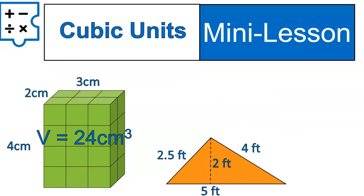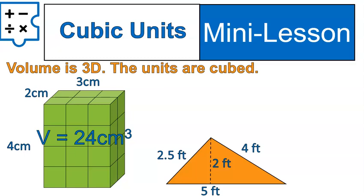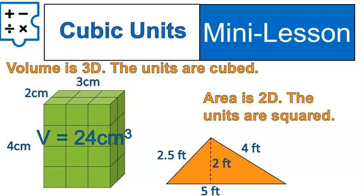I want to show you something about the units — cubic centimeters, or centimeters raised to the power of 3. Because volume is in three dimensions, the units are cubed, raised to the power of 3. In our previous lesson we talked about area — the area of a triangle — and we had square feet, feet raised to the power of 2. So if it's in three dimensions, raise to the power of 3; if it's in two dimensions, raise to the power of 2. Are you working in three dimensions or two? Area is flat — two dimensions. Volume is three dimensions, so we raise to the power of 3.